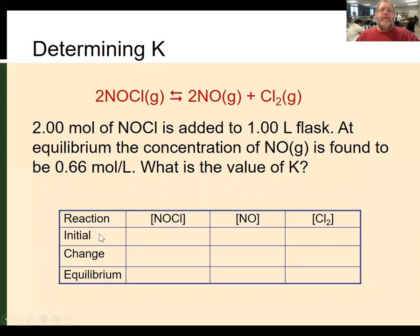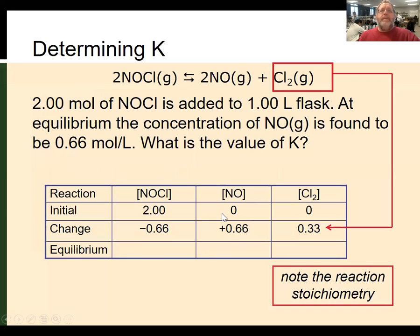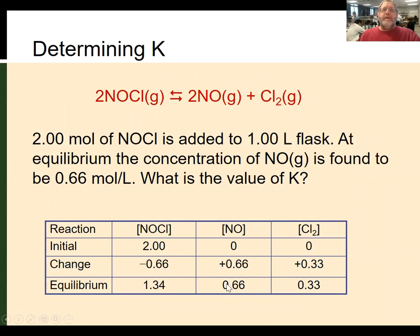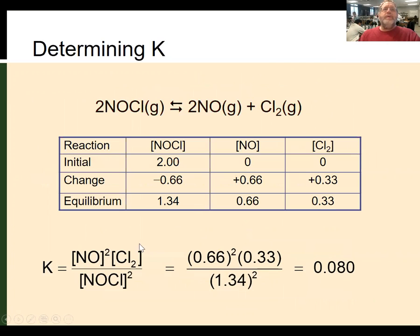Here's our reaction with initial, change, and equilibrium rows. We start with two moles in a one-liter flask, giving us a 2 molar concentration. We know the equilibrium concentration of NO is 0.66. Since NO starts at zero and ends at 0.66, the change is positive 0.66. Chlorine, with a stoichiometric ratio of two NO to one Cl2, is going to be half of that, or 0.33. Since NO increases, the NOCl side must decrease. Using reaction stoichiometry and plugging equilibrium values into our K equation, we get an equilibrium constant of 0.080.